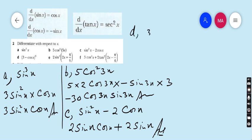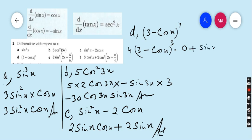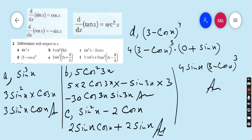Part d: (3 minus cos x) to the power 4. Apply the power rule: bring down 4, giving 4(3 minus cos x) cubed, then multiply by the derivative of (3 minus cos x). The derivative of 3 is 0 and the derivative of cos x is minus sin x, so minus minus gives plus sin x. The final answer is 4 sin x (3 minus cos x) cubed.